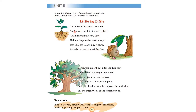It goes like this: Little by little, an acorn said, as it slowly sank in its mossy bed. I am improving every day, hidden deep in the earth away. Little by little each day it grew, little by little it sipped the dew. Downwards it sent out a thread-like root. Up in the air sprang a tiny shoot. Day by day and year by year, little by little the leaves appear. And the slender branches spread far and wide, till the mighty oak is the forest's pride.